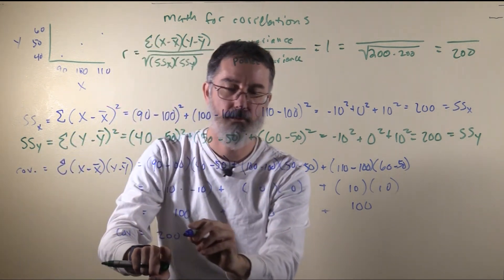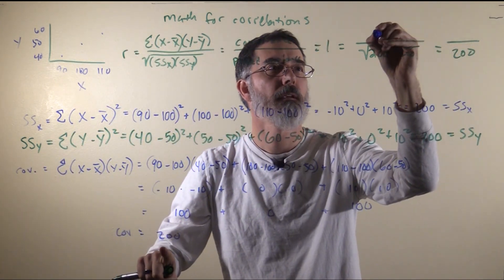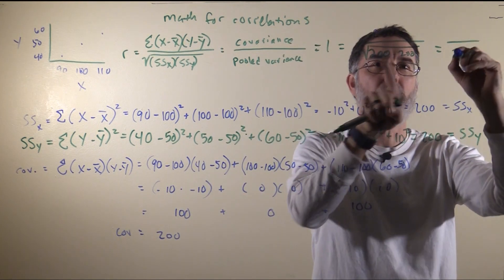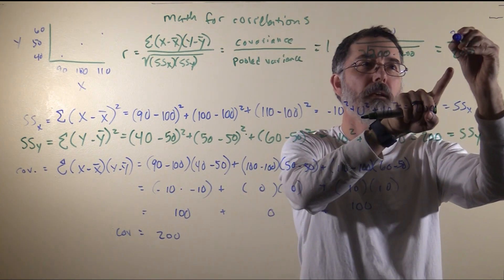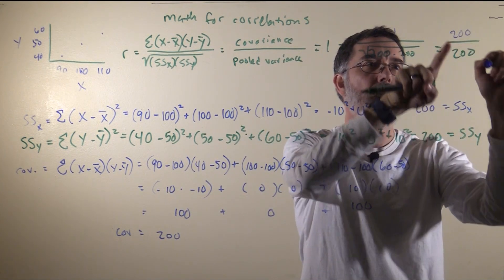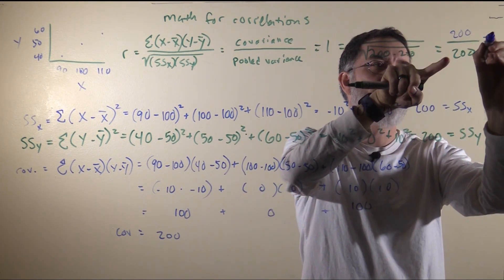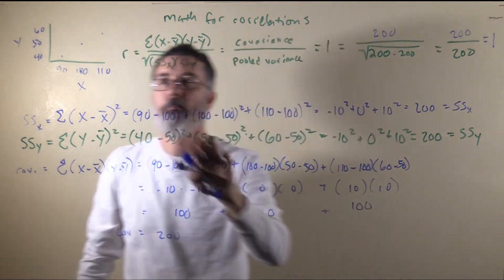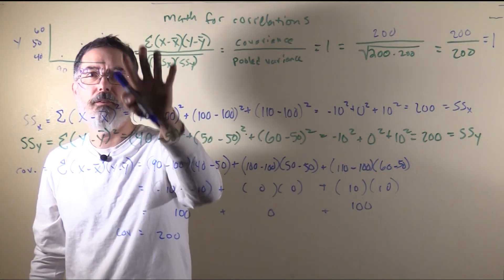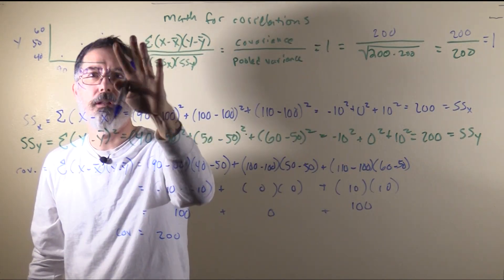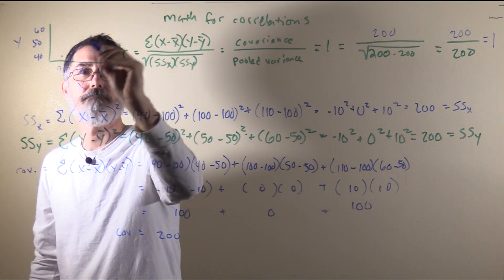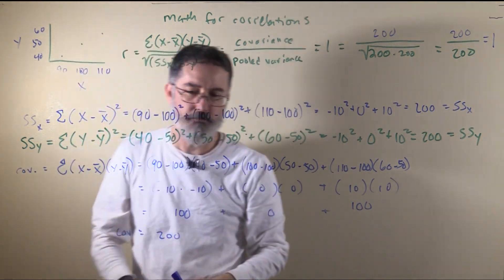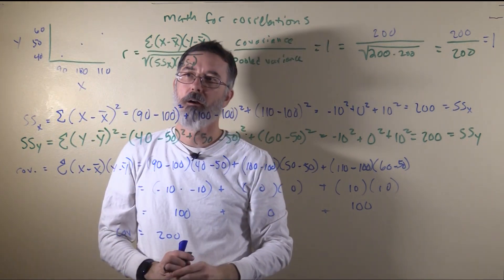This 200 goes in the numerator, and 200 divided by 200 is 1. So we have a perfect positive correlation here between these values, which I did on purpose.